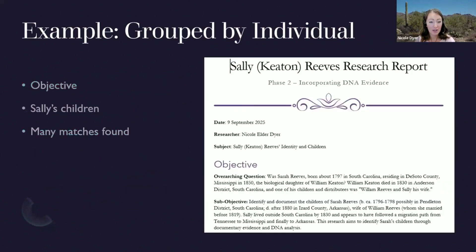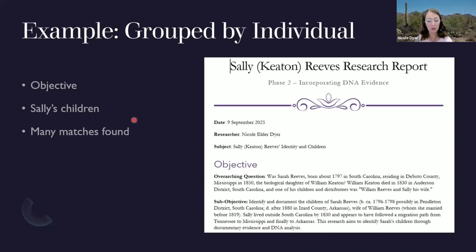I'm going to share an example from my recent report. The objective was to determine if Sarah Reeves, born about 1797 in South Carolina and residing in DeSoto County, Mississippi in 1850, was the biological daughter of William Keaton, who died in 1830 in Anderson District, South Carolina. One of his children and distributees was William Reeves and Sally, his wife. The sub-objective was to identify and document the children of Sarah, and to find out if those children had descendants who had DNA tested and matched descendants of William Keaton — to see if Sarah was the correct daughter of William Keaton.